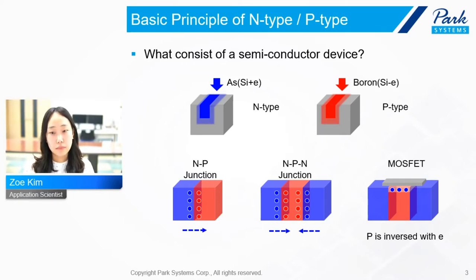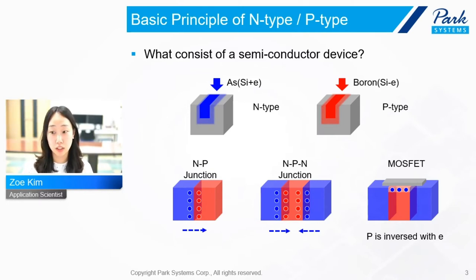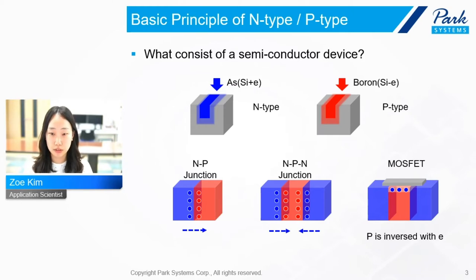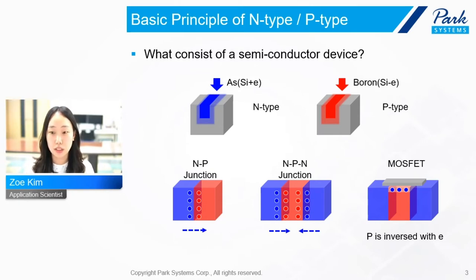If a voltage bias is applied in the proper direction, this junction material will produce a certain amount of current. If an N-P-N junction is made, this flow is stuck in the middle, so even under potential, there will be no current. But if we make a dielectric material on top of this N-P-N junction and apply a voltage to it, we can make the current flow. Applying a positive voltage to the dielectric material attracts negative charges to the top of the P-type material, making a channel of negative charges between the N-type materials. This is the basic principle of the MOSFET structure.